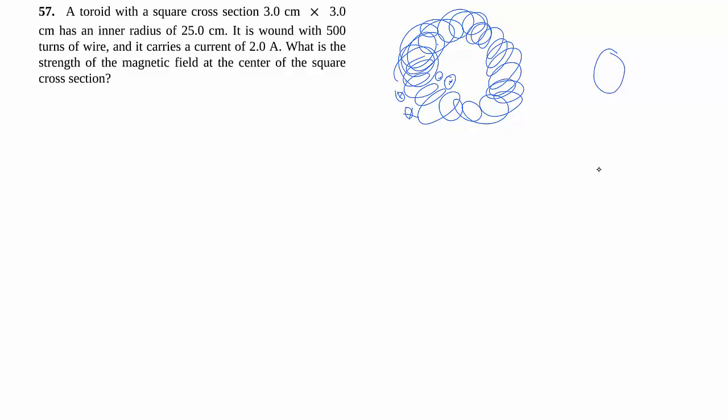So if we cut it across, you see kind of like a cross section that looks like this. The inside has a bunch of current going into the page. There's 500 turns here, I'm not going to draw 500 circles. And then there's an equivalent number of current that goes into the page like that.